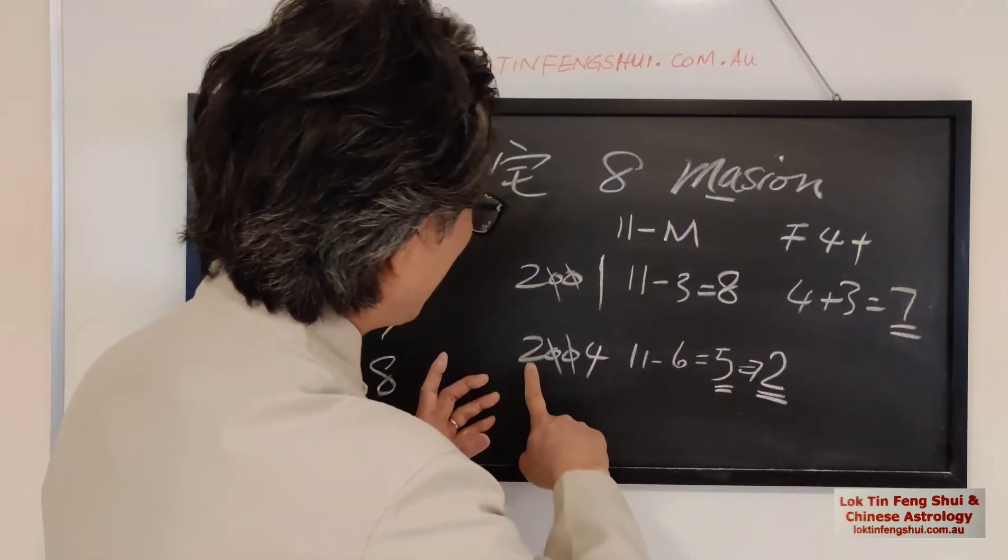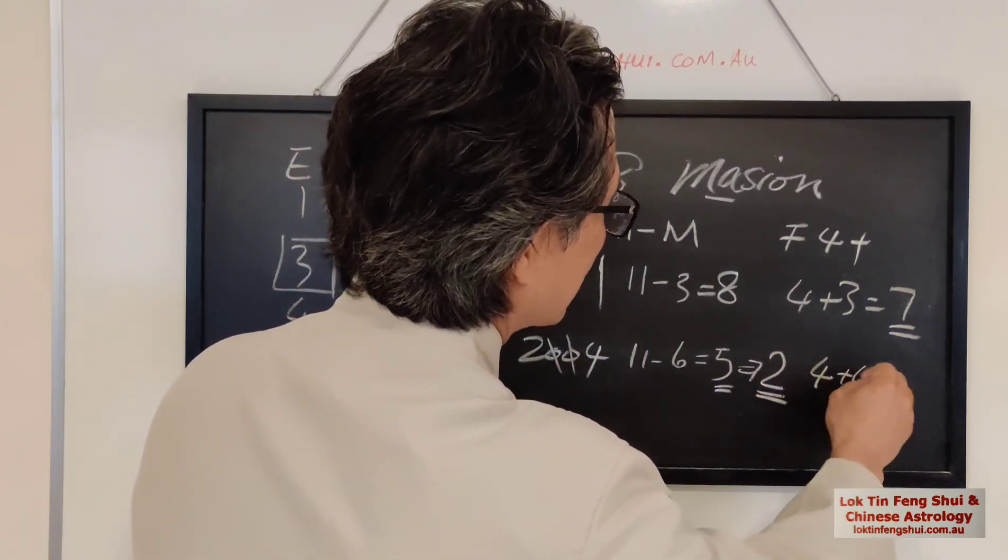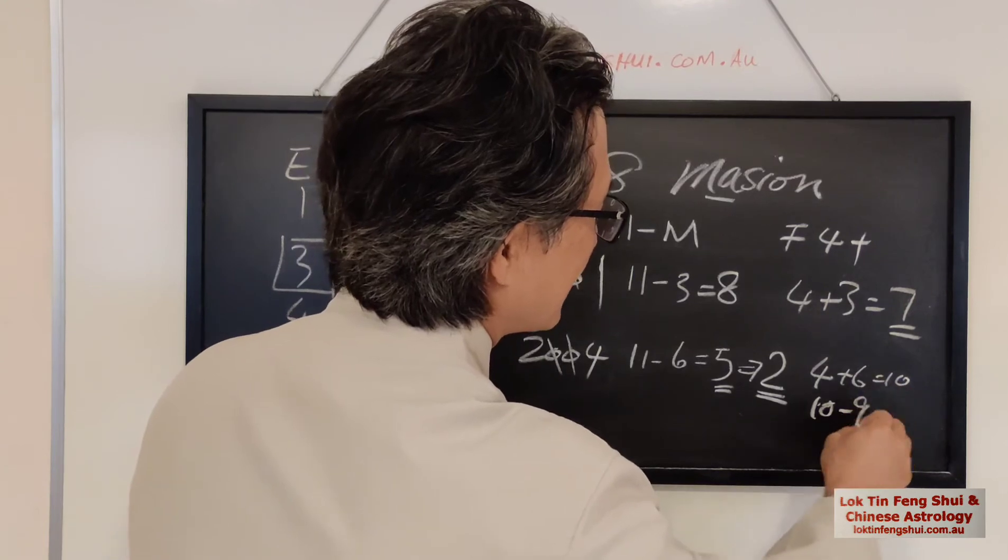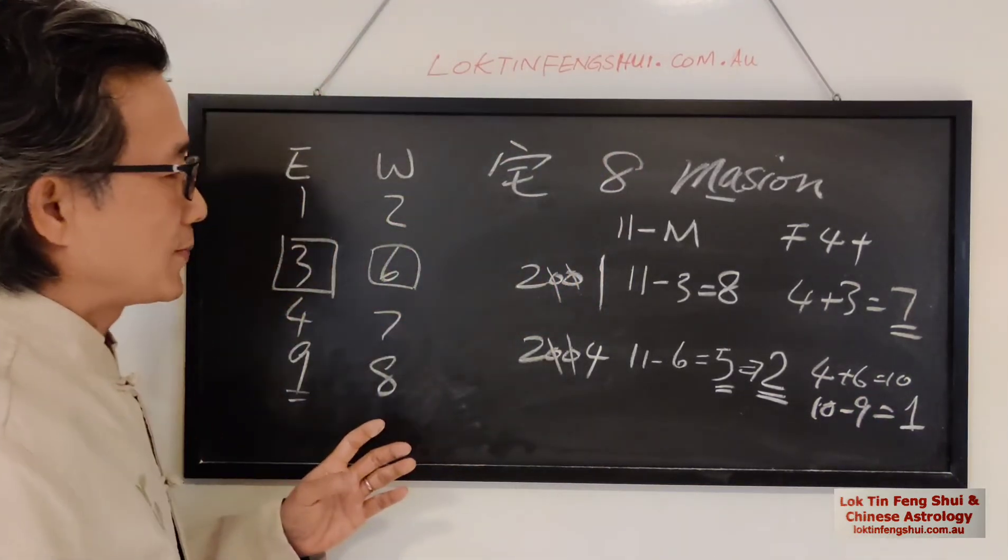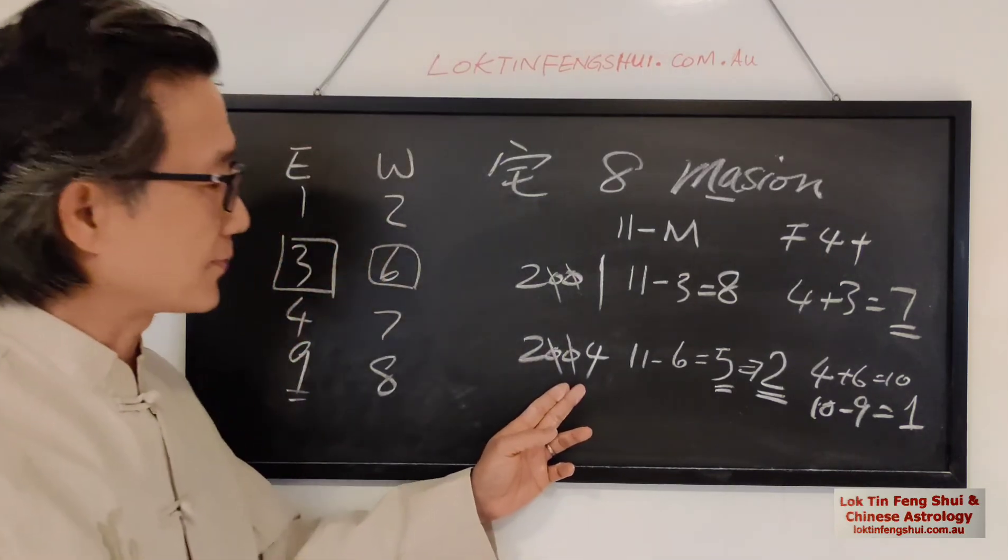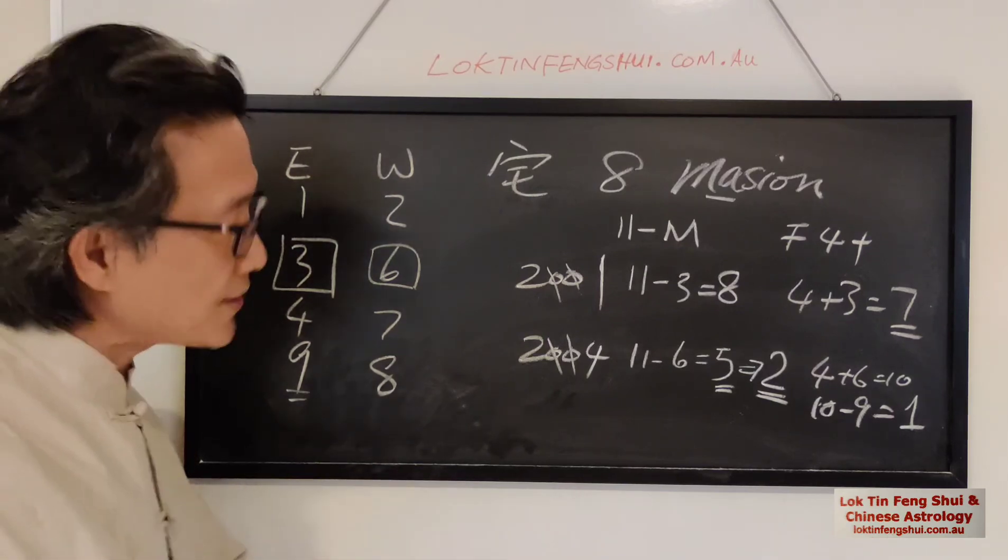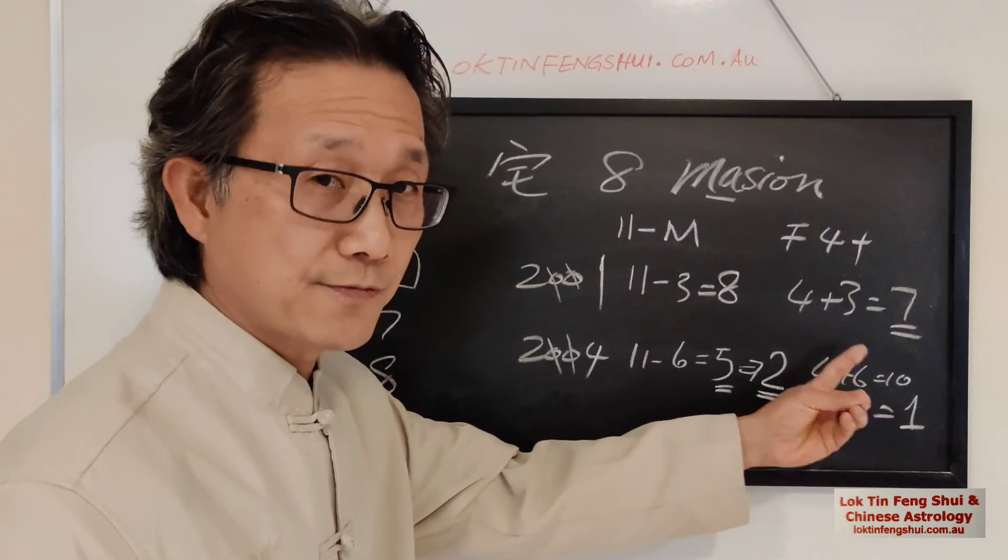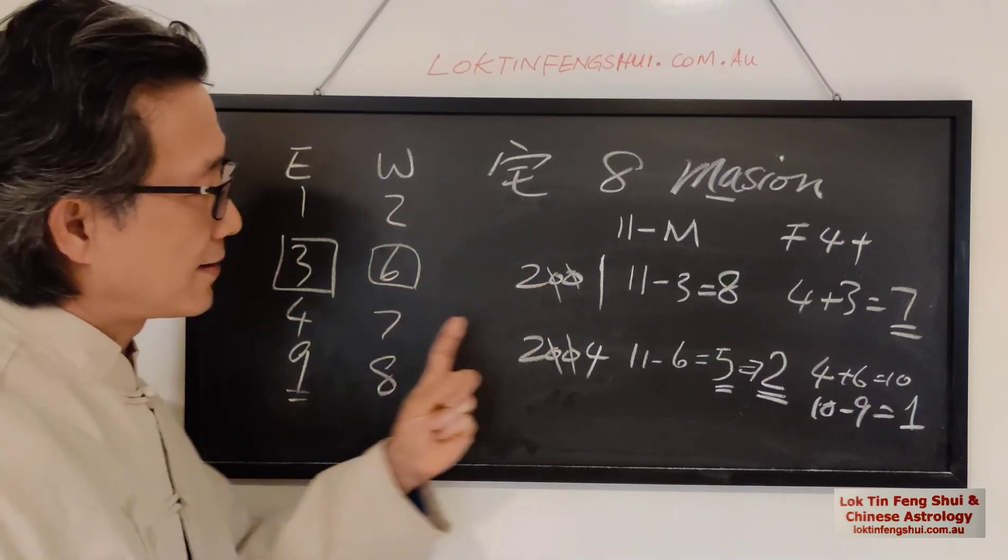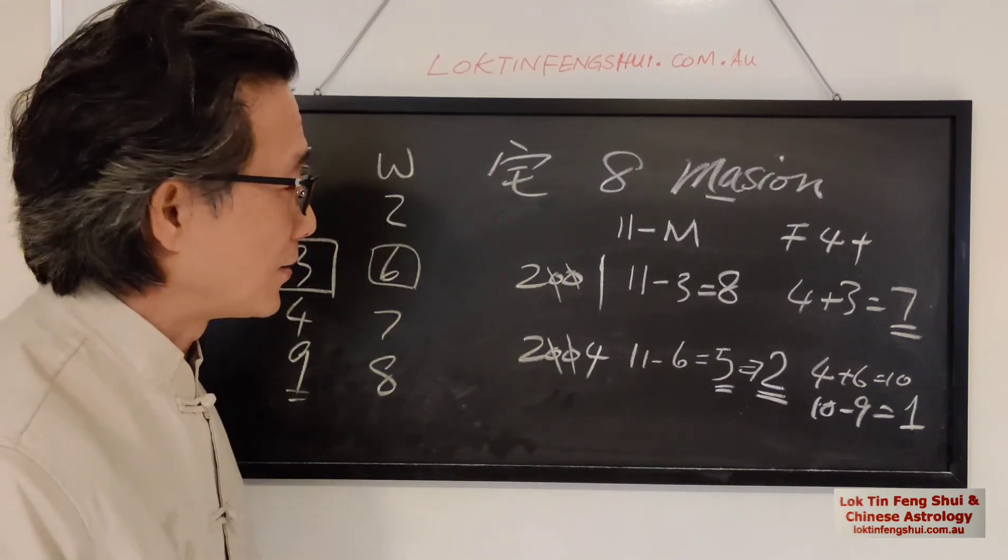So for female born in 2004, six. So four plus six is equal 10. So there's no 10 so we use the 10 minus nine is become one. So the person born in 2004, a female, one is one. So that's how you come up with this number. And based on that theory is like, if you are east group Mingua, you choose the east group house. And the west group Mingua, you choose a west group house. Is this correct? Or is that simple?